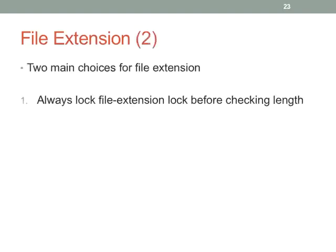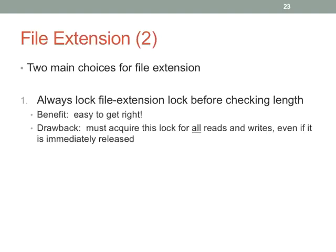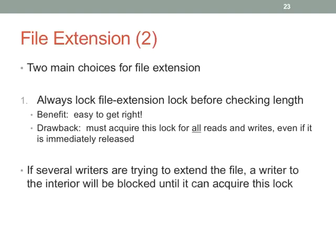Two choices for file extension locking. Option one: always lock the file extension lock before checking the length — that's nice, you can get it right, but it becomes a single point of contention. Any reader has to acquire that lock just to check the file size, so if somebody is doing an extension and you just want to write somewhere inside the file, you're stuck waiting. Option two uses double-check locking to avoid this limitation on concurrency.